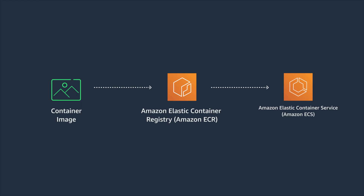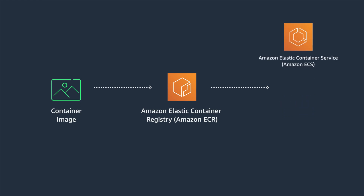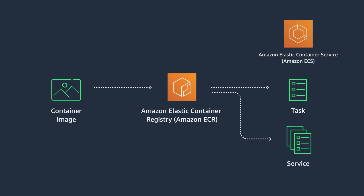There are two ways of running containers on ECS, either as a task or as a service. Tasks are great when you need to process a specific event whenever it occurs. For example, a new image gets uploaded to S3, and you want to create a thumbnail of that image.